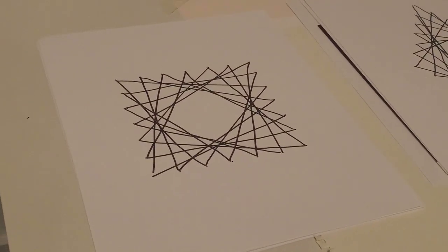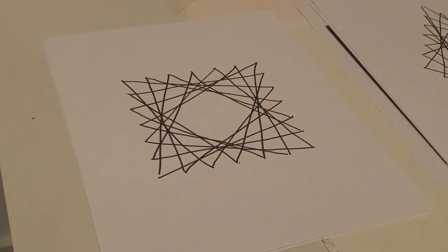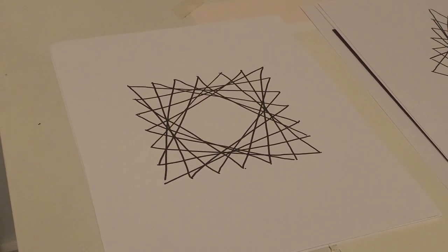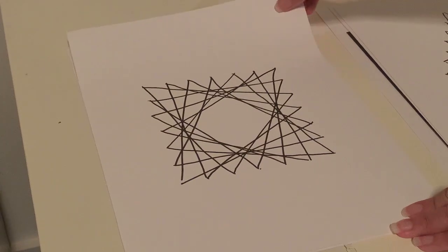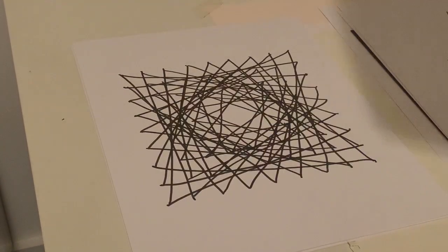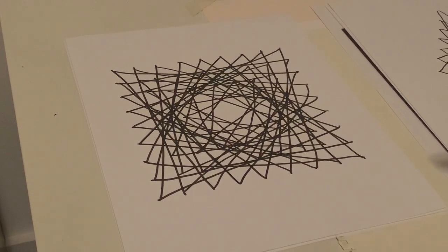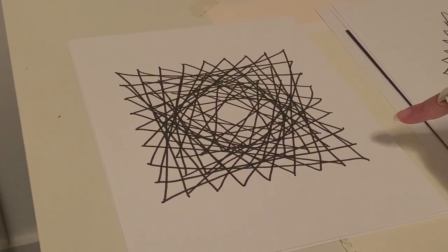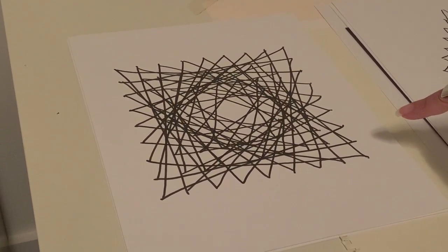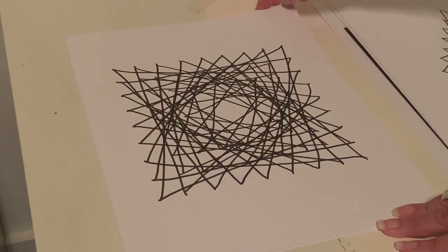But these are all n equals seven quadrilaterals. I could use more points or less points on each side, so I can do an n equals nine, n equals seven, n equals five, and then I can layer them. So this is an n nine, n seven, n five, all centered within each other, but they don't necessarily have to be centered.